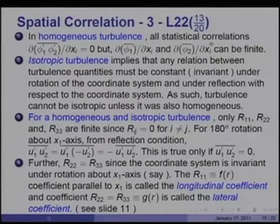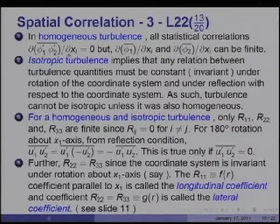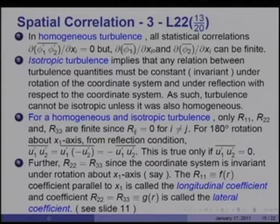To continue our discussion of spatial correlation coefficients, recall that these correlation coefficients — nine of them — are difficult to measure in a real non-homogeneous, non-isotropic turbulence. Usually, when measured, they are only measured in one direction, say R11. In homogeneous turbulence, all statistical correlations of time-averaged fluctuating components are zero, their gradients are zero, but gradients of mean quantities can be finite. That is the definition of homogeneous.